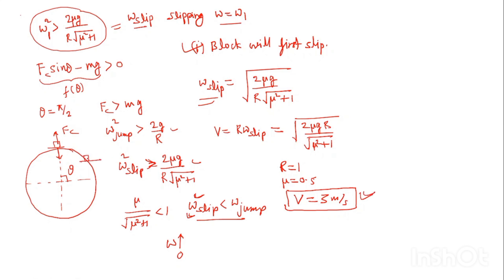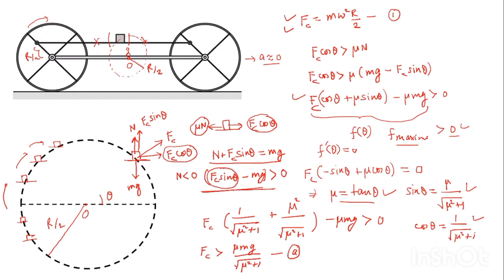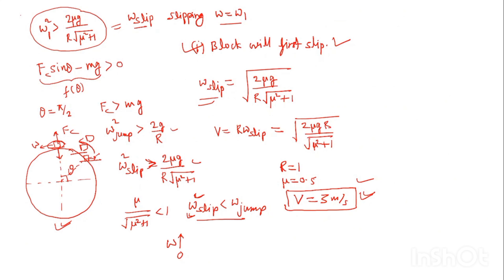Once slipping occurs, the block's trajectory is no longer circular, so the condition for jumping cannot be determined from the given setup. Therefore, only two options are correct: the block slips first, and slipping occurs when the train velocity equals 3 m/s. I hope you liked the video. If you have any questions, please mention them in the comments, and stay tuned for solutions to more tough questions from the test series. Thank you.